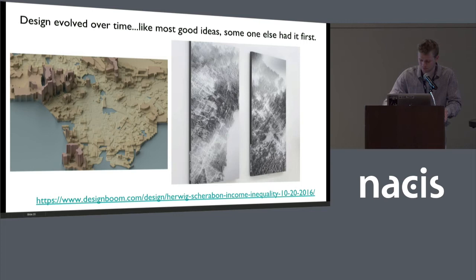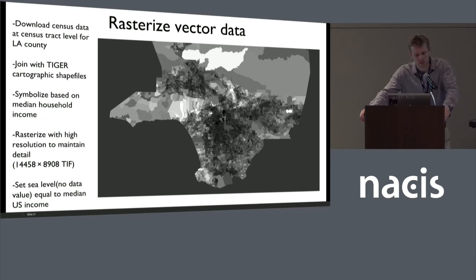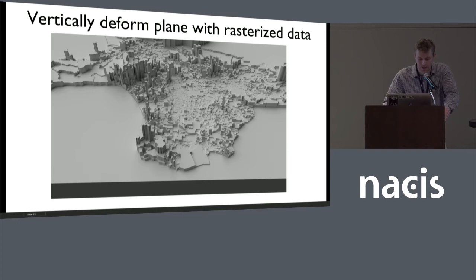The first thing I did was grab census data. If you want to visualize vector data in Blender, one way is to bring it in as a raster. I grabbed census data, joined with the Tiger cartographic shapefiles, and symbolized as grayscale based on median household income — white for wealthier areas, black for lower-income areas. I set my no-data value equal to median US income as a reference point, especially for the coastal areas. Then, just like in Daniel's tutorial, I'm displacing a plane in Blender based on the grayscale pixel value to get this landscape with rich areas looking like skyscrapers.